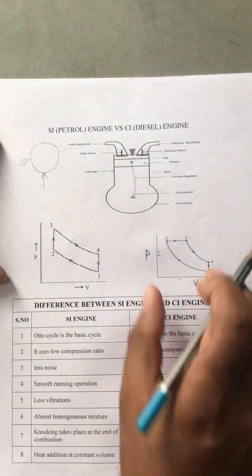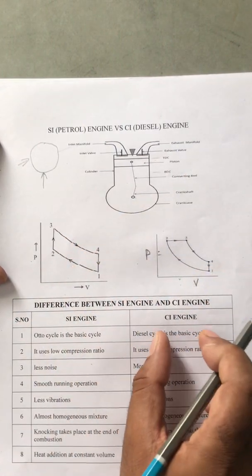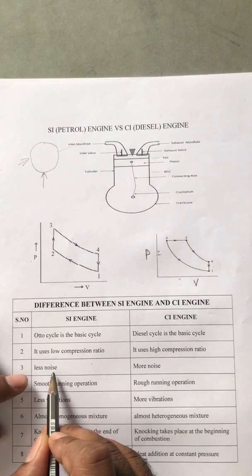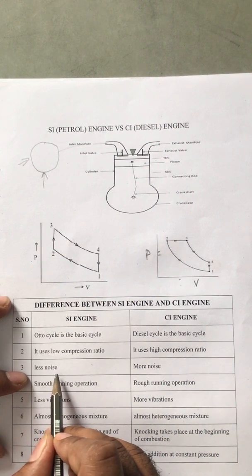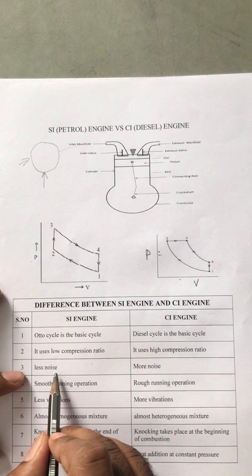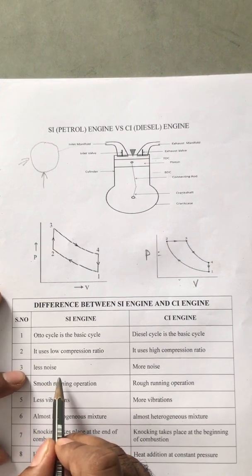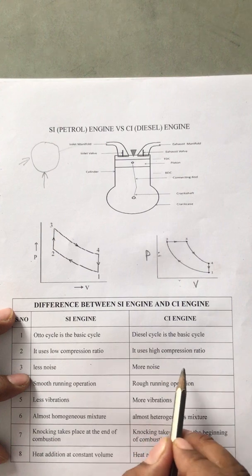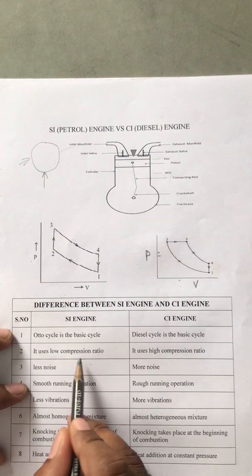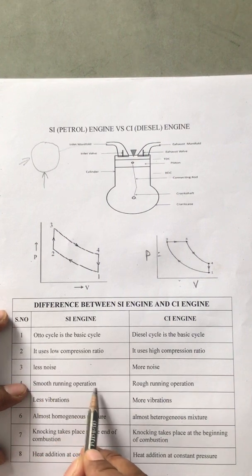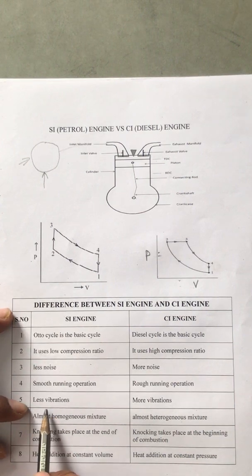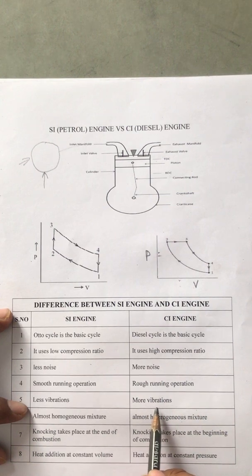The compression ratio is low in the SI engine and high in the CI engine. Because of the lower compression ratio, the SI engine runs smoothly with less vibration and less noise - that is why nowadays most cars are designed with petrol engines, though some use diesel as well. The diesel engine gives more noise and vibration due to the high compression ratio. Examples of high-vibration diesel applications are tractors, lorries, and buses.